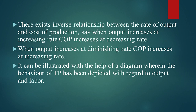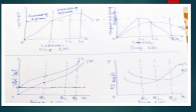When output increases at a diminishing rate, that means cost of production will increase at an increasing rate — because output is increasing, yes, but at a diminishing rate. This can be illustrated with the help of a diagram showing the behavior of total product with regard to output and labor.